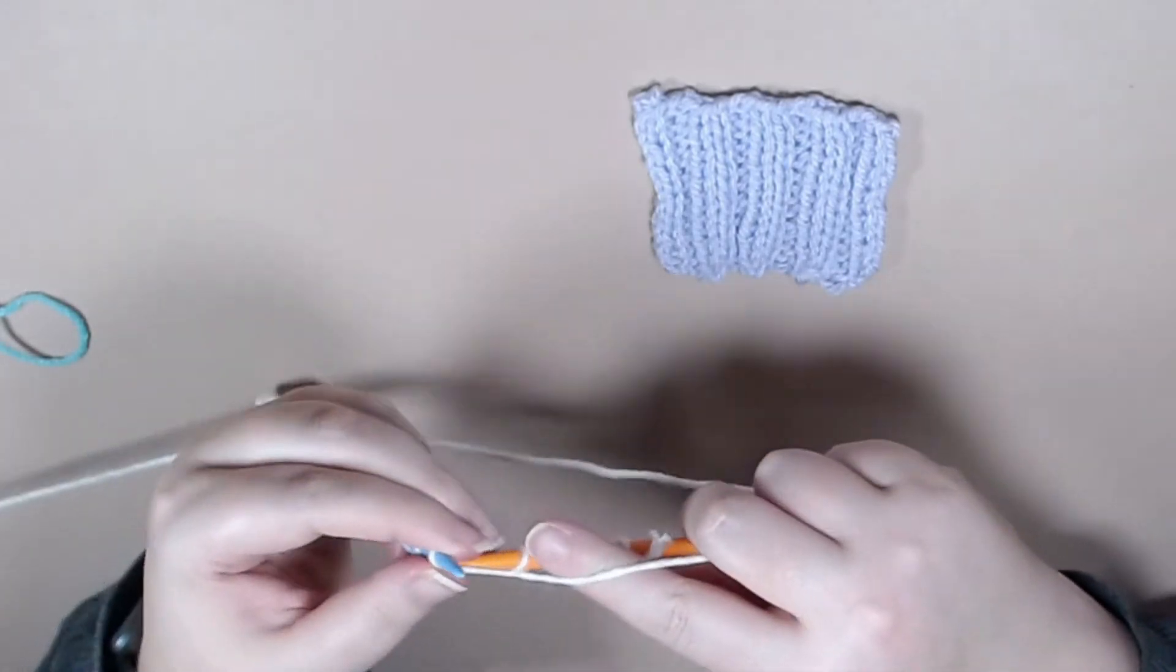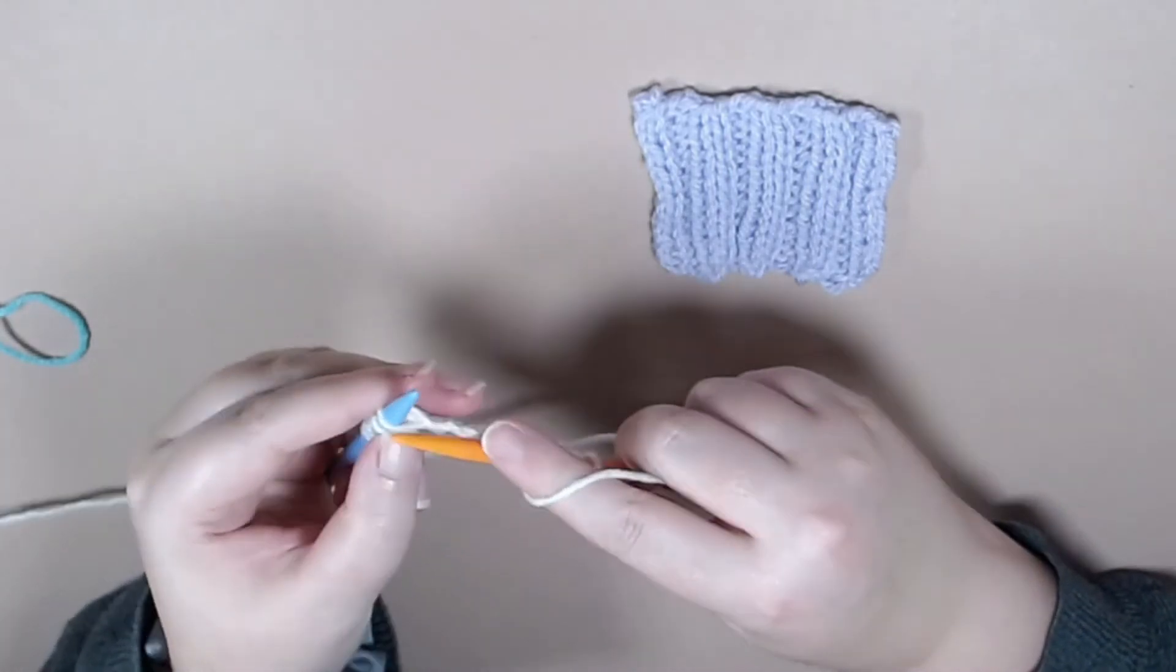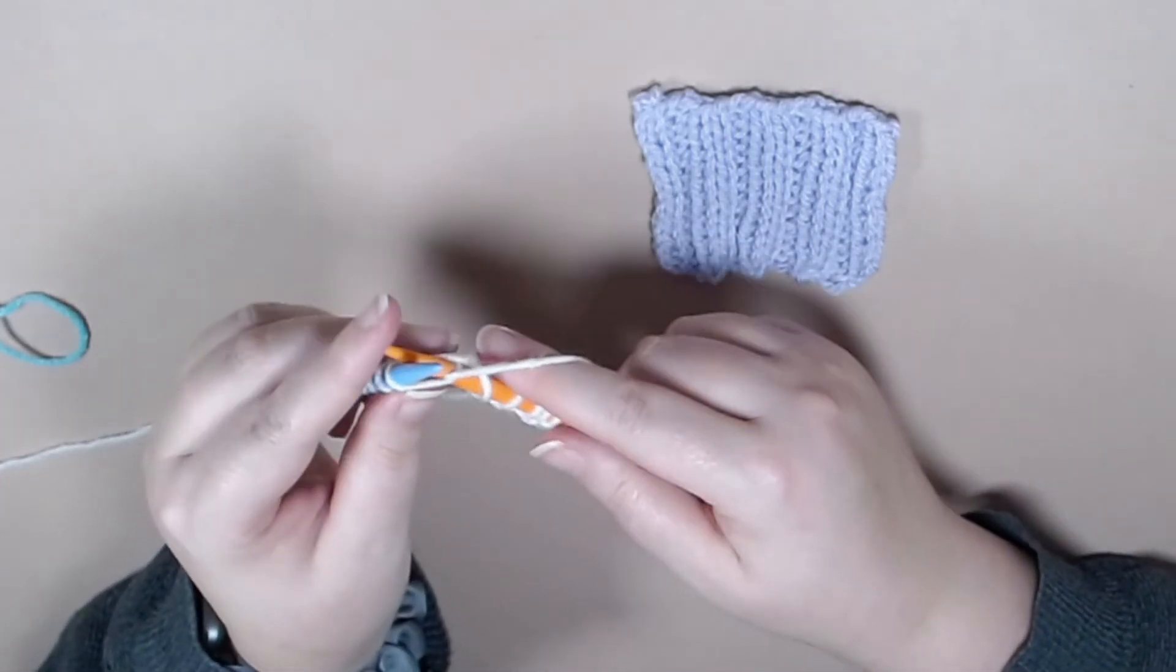So I'm working a repeat of knitting 2, purling 2. And you'll repeat rows 1 and 2 until you get to your desired size for your project.